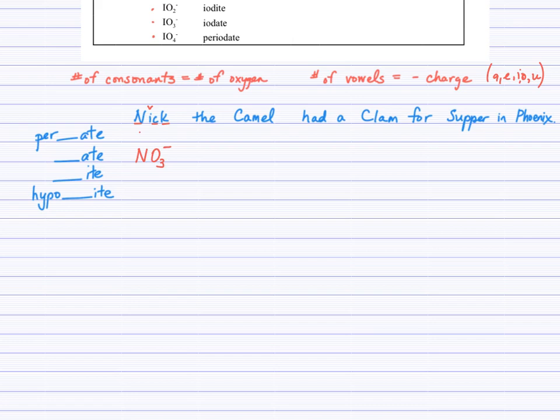Camel will give you carbonate. Take the first letter, capital C. Now how many consonants are there? One, two, three. And so we'll get CO3. How many vowels? One, two. So we'll have a two negative charge. So carbonate, CO3 two negative.